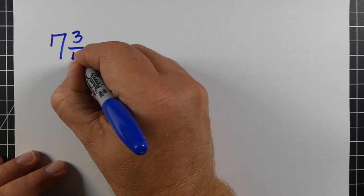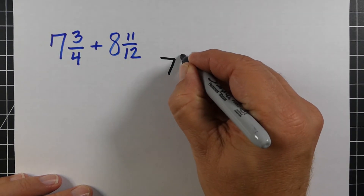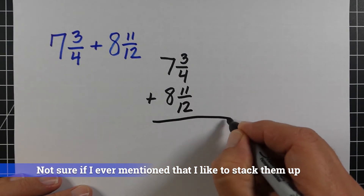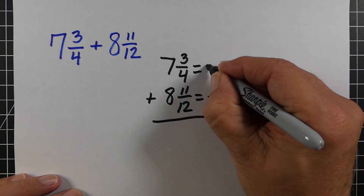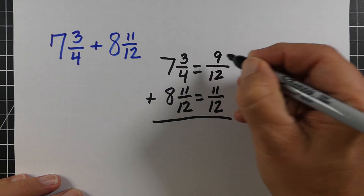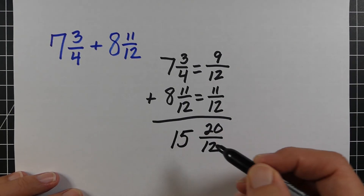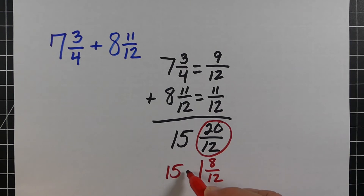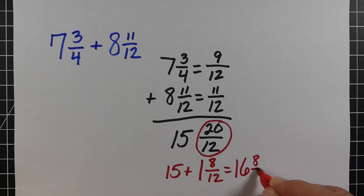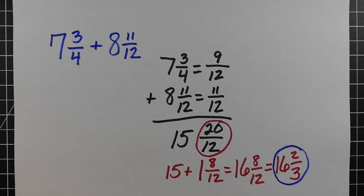Another example: 7 and 3/4 plus 8 and 11/12. Stacking them, we need a good common denominator — 12 is best, rather than multiplying 12 times 4 to get 48. The bottom fraction doesn't need to change. The top one, we multiply by 3. Once we add, we get 20/12 and the whole numbers 7 plus 8 equal 15. The 20/12 becomes 1 and 8/12. Adding all together gives 16 and 8/12. But 8/12 simplifies — divide both by 4 — giving us 16 and 2/3.